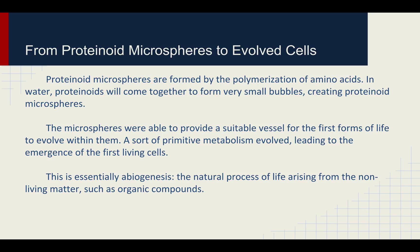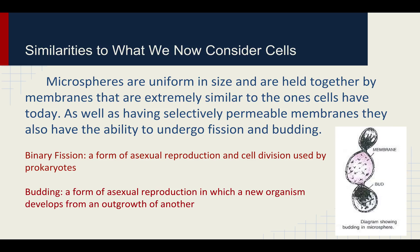The definition that suits this is abiogenesis, which is the natural process of life arising from non-living matter such as organic compounds. Similarities to what we now consider cells: microspheres are uniform in size and are held together by membranes very similar to the ones cells have today. They are selectively permeable, as mentioned before, and they also have the ability to undergo fission and budding, which is a very common form of asexual reproduction seen in many different life forms.